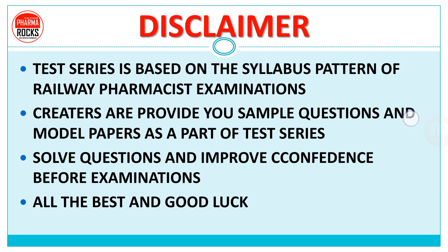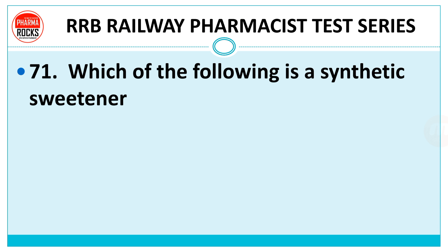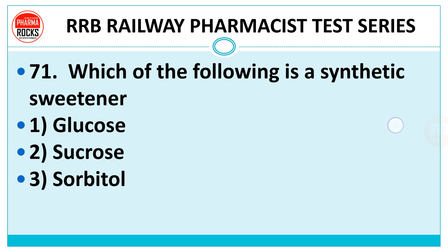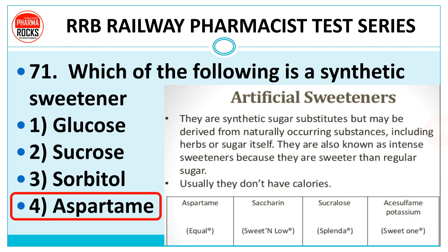Pharma Rocks pharmacist exam book is available — contact us on 9016312020 to order. Question number 71: which of the following is a synthetic sweetener? Options are glucose, sucrose, sorbitol, or aspartame. The right answer is aspartame. Synthetic sweeteners are derived from a substitute but may be derived from naturally occurring substances — for example, aspartame, saccharin, and aspartame potassium.